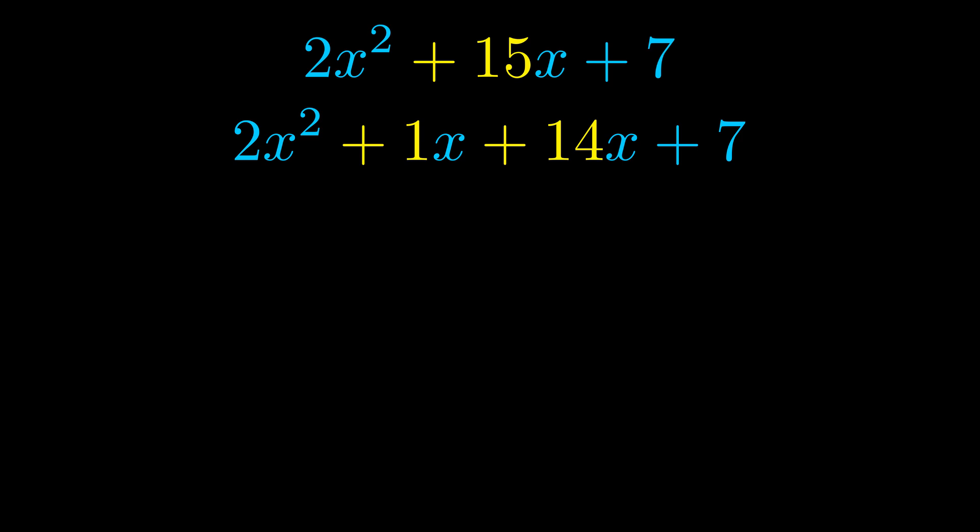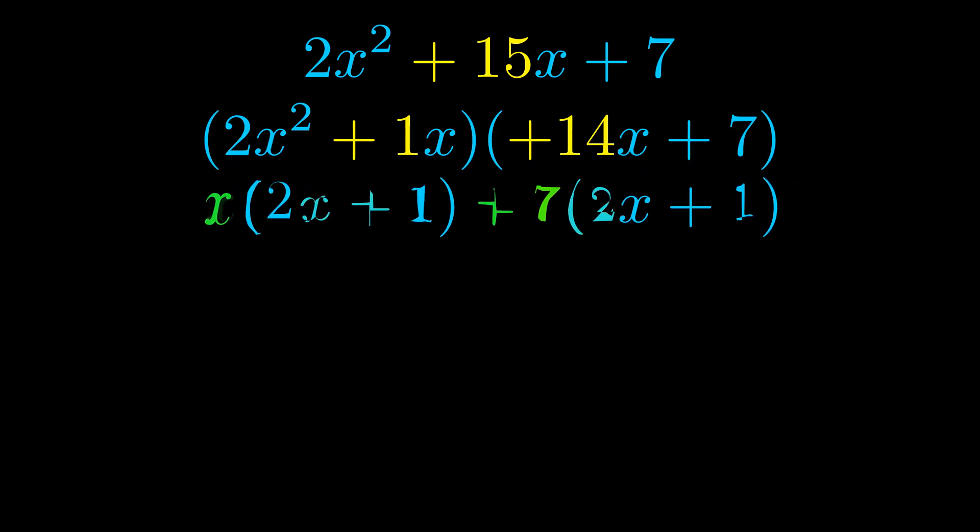Once we've done this we go ahead and we put parentheses around the first term and the last term. And we do that so that we can take the greatest common factor out of both terms. We can see the greatest common factor is now outside in green. Notice also how what remains inside of the parentheses is the same in both cases.